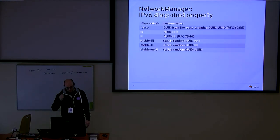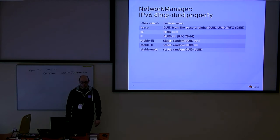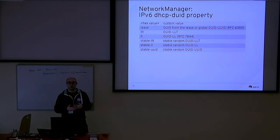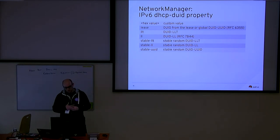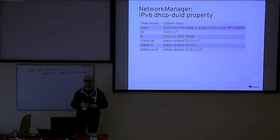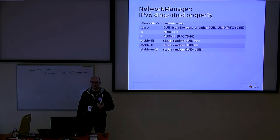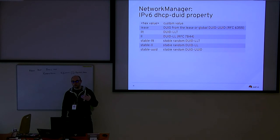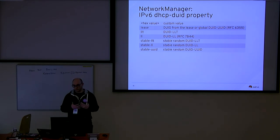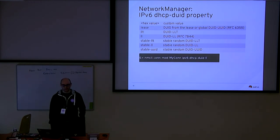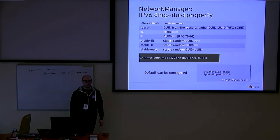For IPv6, the option in NetworkManager is called ipv6.dhcp-duid. You have multiple options. The one you want for privacy is "ll" — standing for link layer — which means: base your DUID on the actual MAC address. This is compliant with the anonymity profile standard. The default instead is to pick up the DUID from a lease file if the connection has been started before; otherwise, the default is to use a permanent per-host DUID, which would reveal your identity. You can change it with nmcli using the property ipv6.dhcp-duid, and you can also change the default in the NetworkManager configuration.